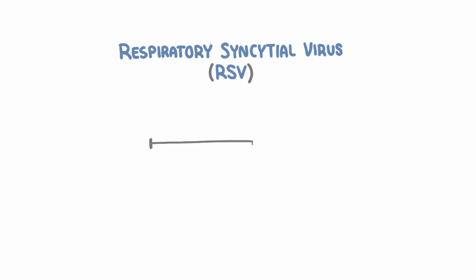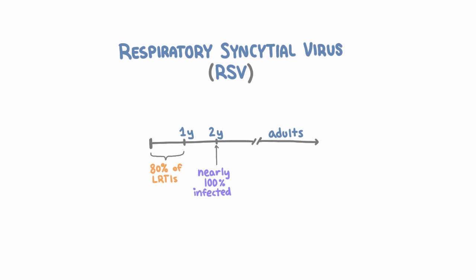RSV almost always affects infants less than a year old. It causes more than 80% of lower respiratory tract infections in this group, and by their second birthday, almost all children will have been infected by RSV. Occasionally, adults can develop symptomatic RSV infections, but it's usually mild and isolated to the upper respiratory tract.